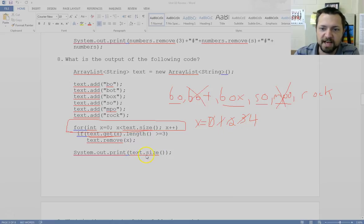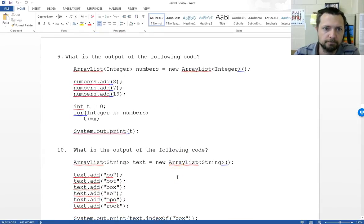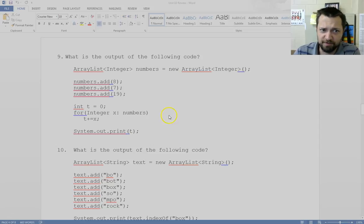So when we print off the size of our list, it is 1, 2, 3, 4 things. And something important to note, all the things that are 3 or longer are not gone.